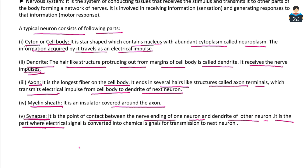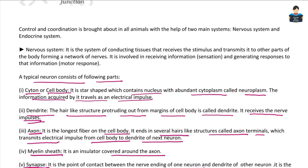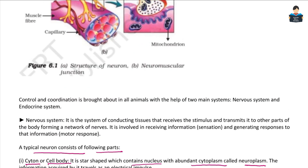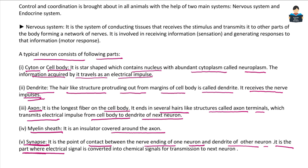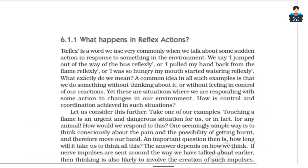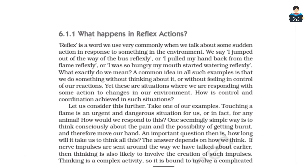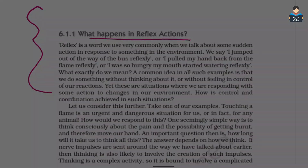So the neuron has been defined and the parts of the neuron have been written with the diagram. All the important points have been covered. In the next topic, we will cover what happens in reflex action. Like, share, and subscribe. Thank you.